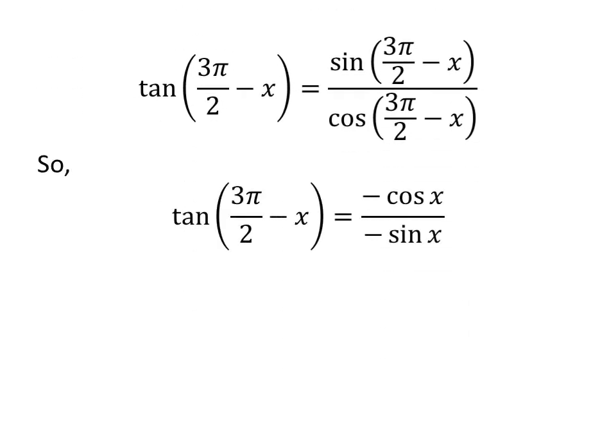Let us apply the above identities in the expression for tan(3π/2 - x). So, tan(3π/2 - x) = -cos(x)/-sin(x).